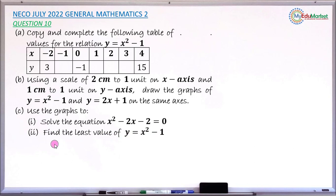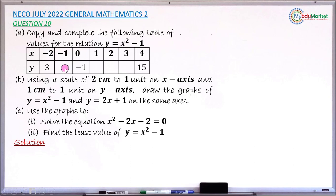Let's attempt the solution. For question a, we complete the table by finding the missing y values. When x is minus 1, substitute into y equals x squared minus 1: minus 1 squared gives positive 1, and 1 minus 1 gives 0. So when x is minus 1, y equals 0 — write 0 in the table.